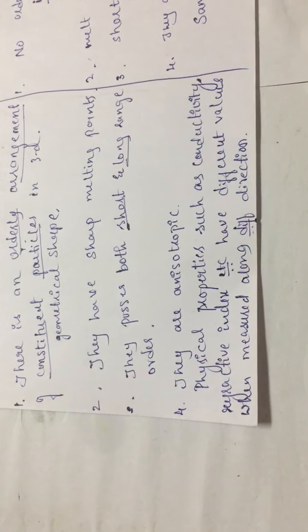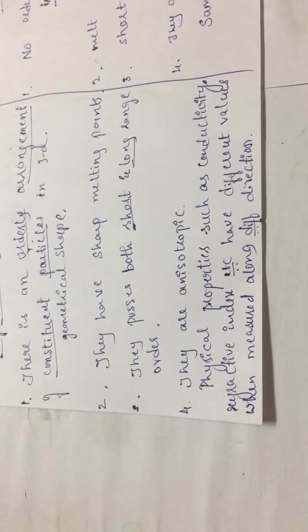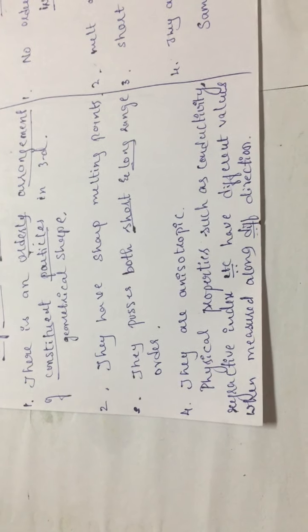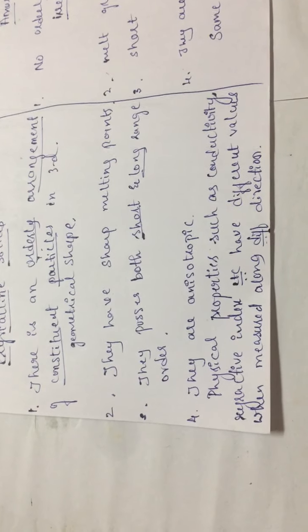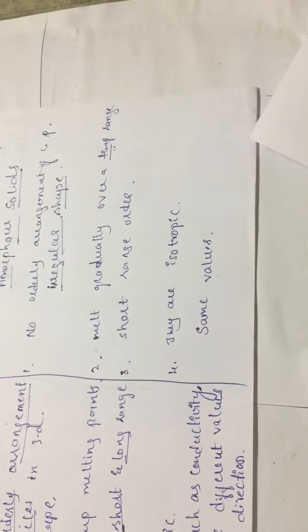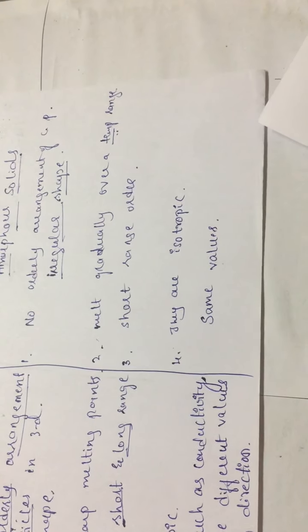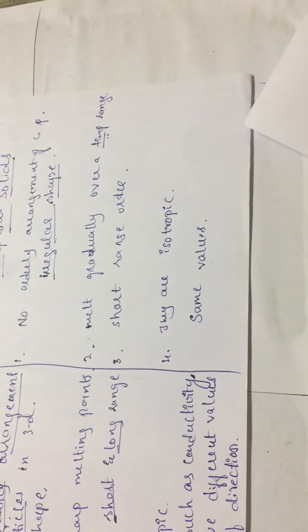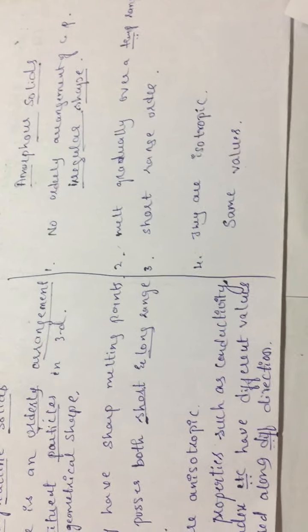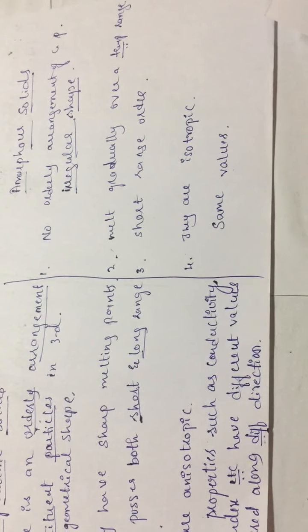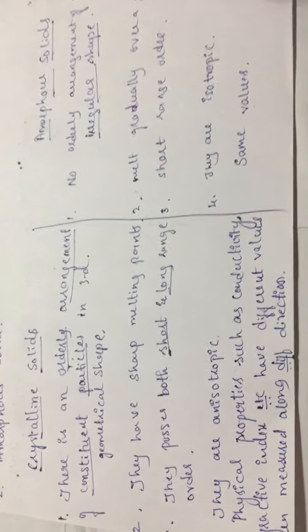In crystalline solids, when you measure the refractive index, conductivity, or any other physical property along different directions, they give different values. But in amorphous solids, measuring along different directions gives the same value — that is isotropic in nature. Therefore, crystalline solids are anisotropic and amorphous solids are isotropic in nature.